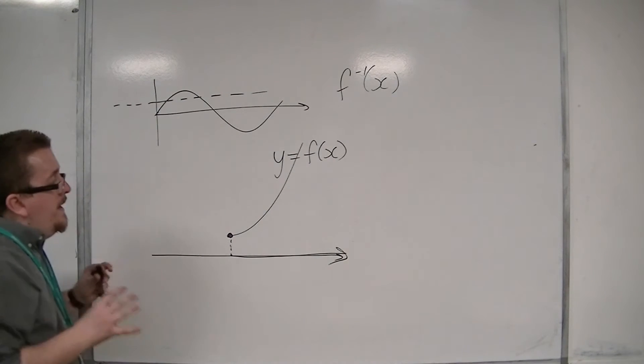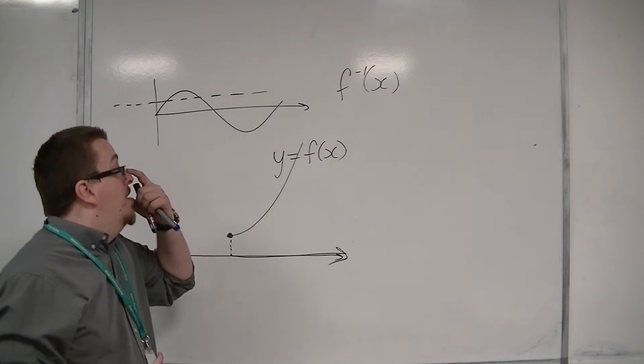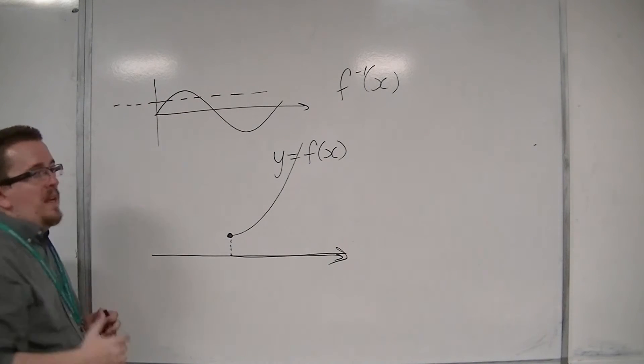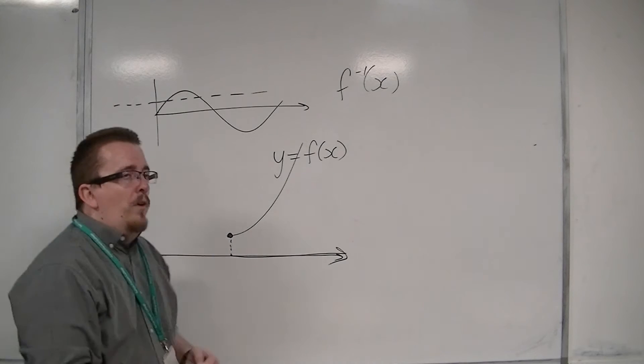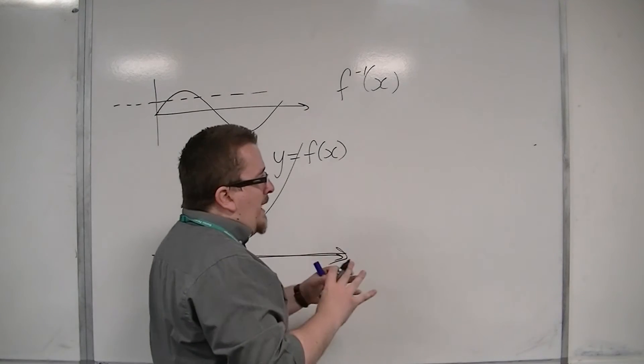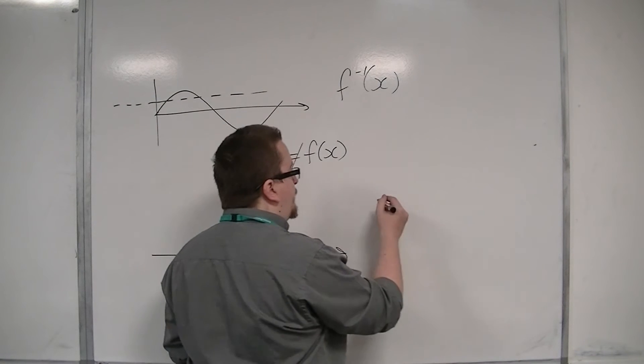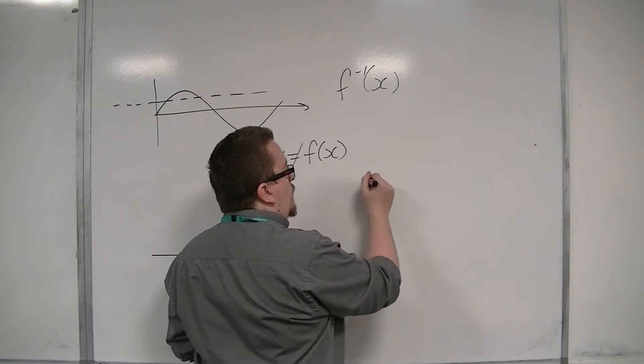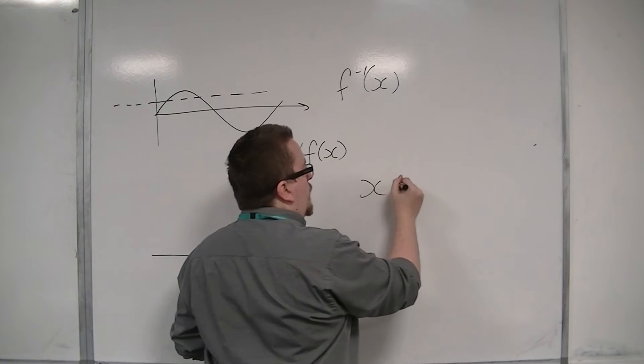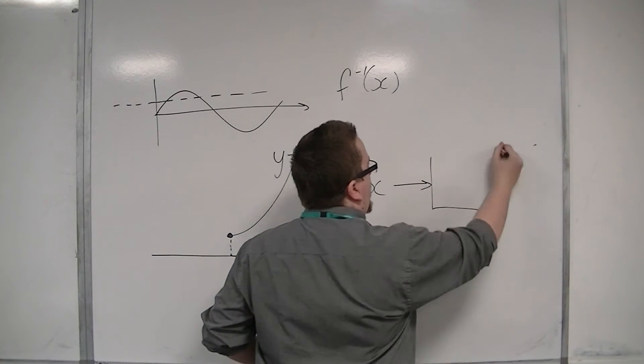So why is it this way? Why can't we have a function as being many-to-one? The problem goes back to the function machines that we've looked at before. If you've got one value going into your function machine,